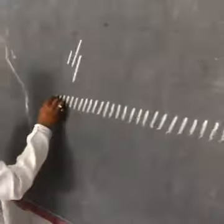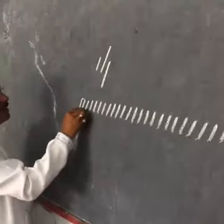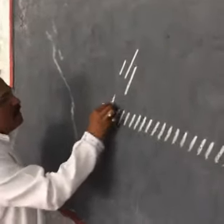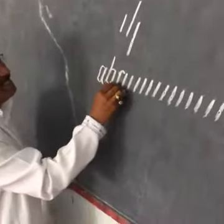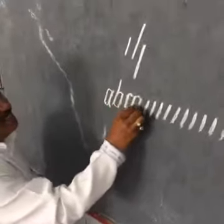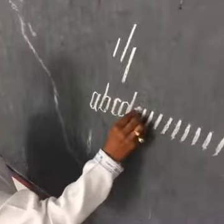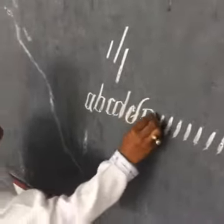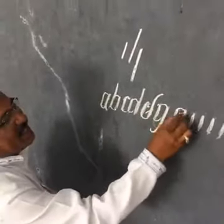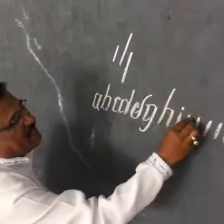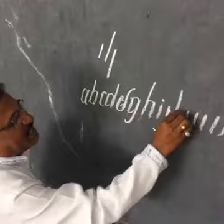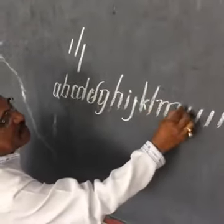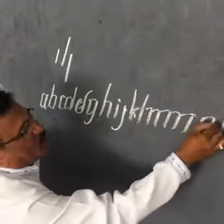So, what should we do? A, this is B, this is C, this is D, this is E, F, G, H, I, J, K, L, M, N, O, P.